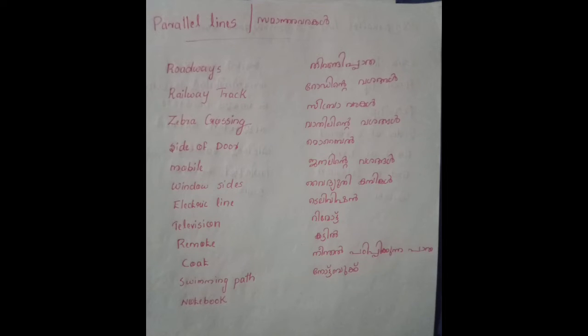The voice is not clear. Parallel lines — some other regular examples: roadways, railway track, zebra crossing, side of door, mobile, window side, electric line, television, remote, car, swimming path, notebook.